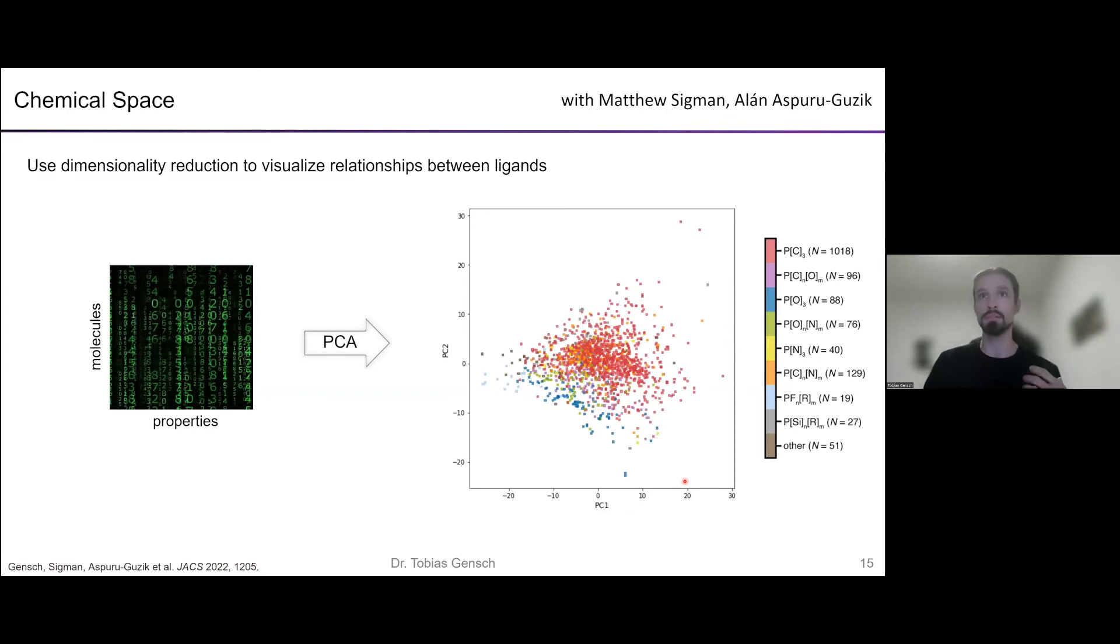However, now we can add information that we know as chemists and start to make sense of the relative positions of the ligands in this space. For example, here I've highlighted each point by the type of element that is connected to phosphorus in the compound. As chemists, we know that this defines distinct ligand classes such as phosphines, phosphites, phosphoramidites, and so on. That is not information that was explicitly added to the descriptor set. So it is gratifying to see that we see somewhat well separated regions of phosphites, phosphoramidites, and phosphines in the space. This basically shows us that there's some sort of relationship between the geometric proximity in the space and corresponding chemical similarity of ligands.